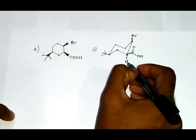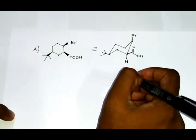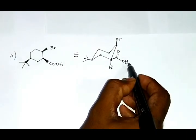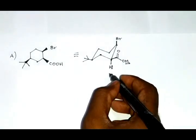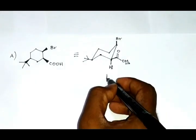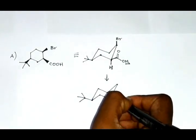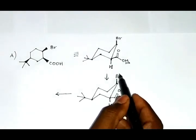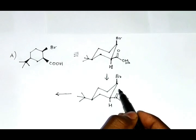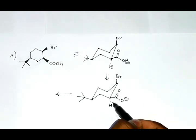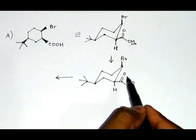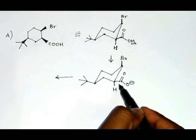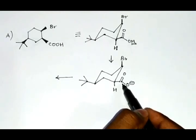The carboxylic acid group is again above the plane of the paper, so it comes at the equatorial position, and the hydrogen will automatically come below the plane of the paper. This carboxylic group will lose a proton. The hydrogen and the bromine group are anti-periplanar to each other, so they will undergo E2 elimination.